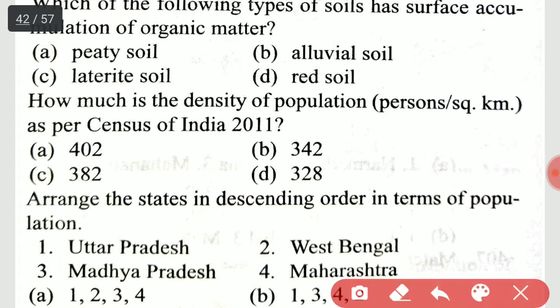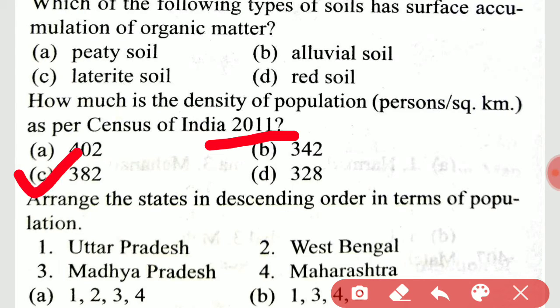What is the density of population per square kilometer as per the census of India 2011? A very important question — it is 382 persons per square kilometer as per the census of India 2011.